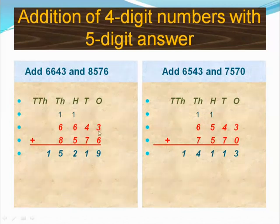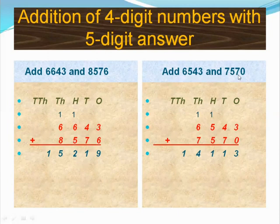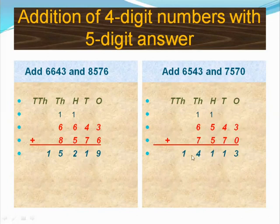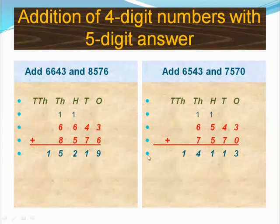It's a 4-digit question with a 5-digit answer. Next, add 6,543 and 7,570. First write the numbers one below the other and start from the ones place to the next place. The answer equals 14,113. In the question there are 4 digits, and in the answer there are 5 digits. That is addition of 4-digit numbers with a 5-digit answer.